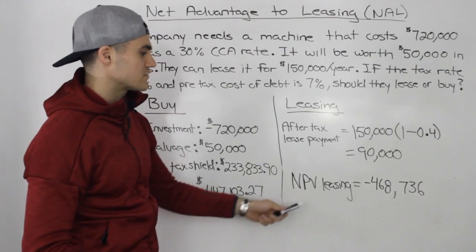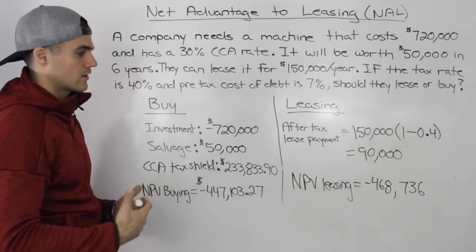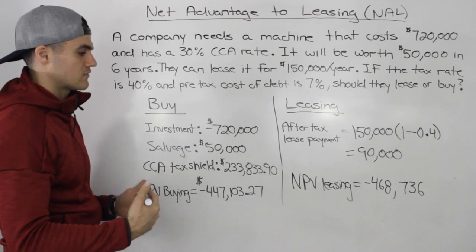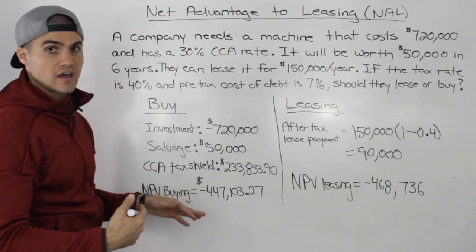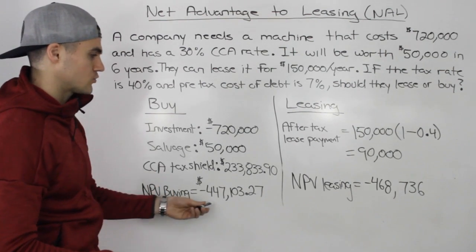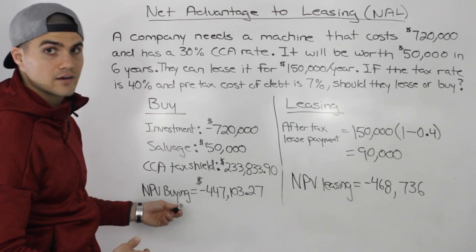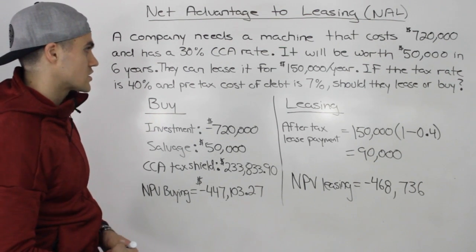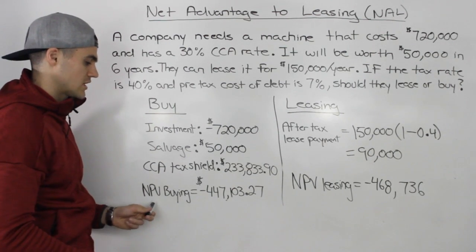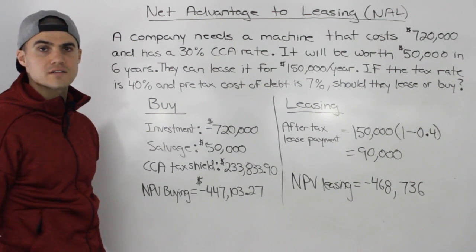Comparing the NPV of leasing (−$468,736) versus the NPV of buying (−$447,103.27), both NPVs will always be negative, so you take the one that costs the least — the one with the higher NPV. The net present value of buying is higher, so they should buy the machine because buying has a higher net present value, or lower cost.